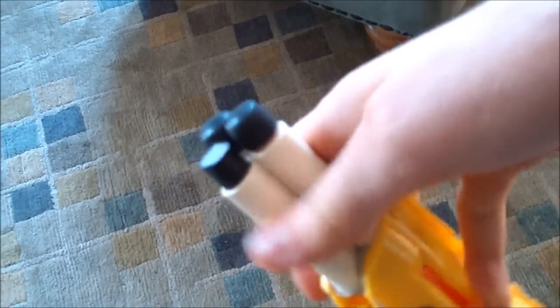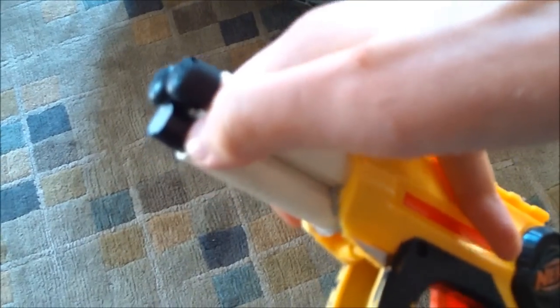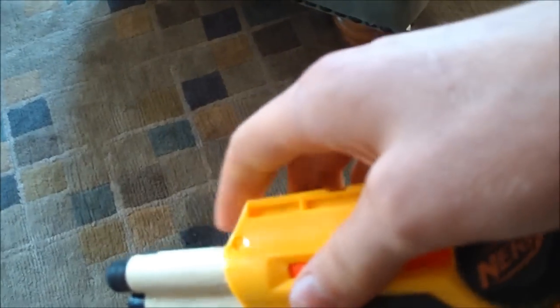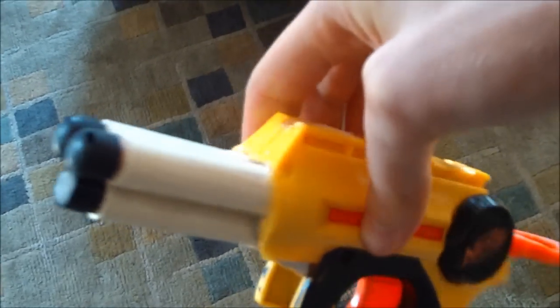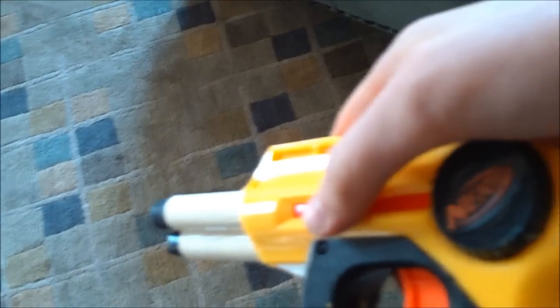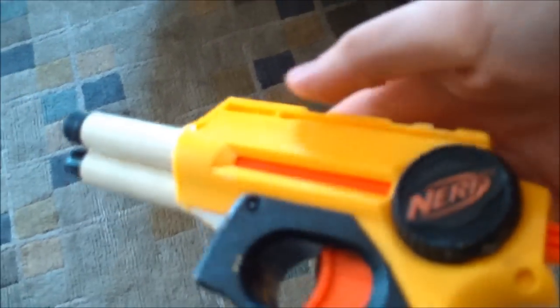But I took one of my foam Stefans and I just wrapped it in E-Tape and stuffed it down a third barrel. Now the ranges have greatly improved. I'm getting 30 to 40 feet now. With an average dart spread of only five feet, which is great.